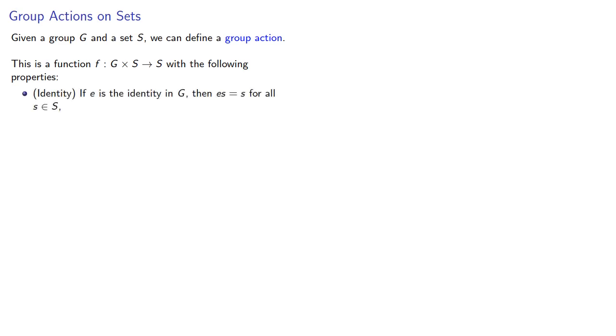The identity property: if E is the identity in our group G, then ES is equal to S for all S in S. And associativity: if A, B are elements of G, then AB applied to S is A applied to B applied to S.